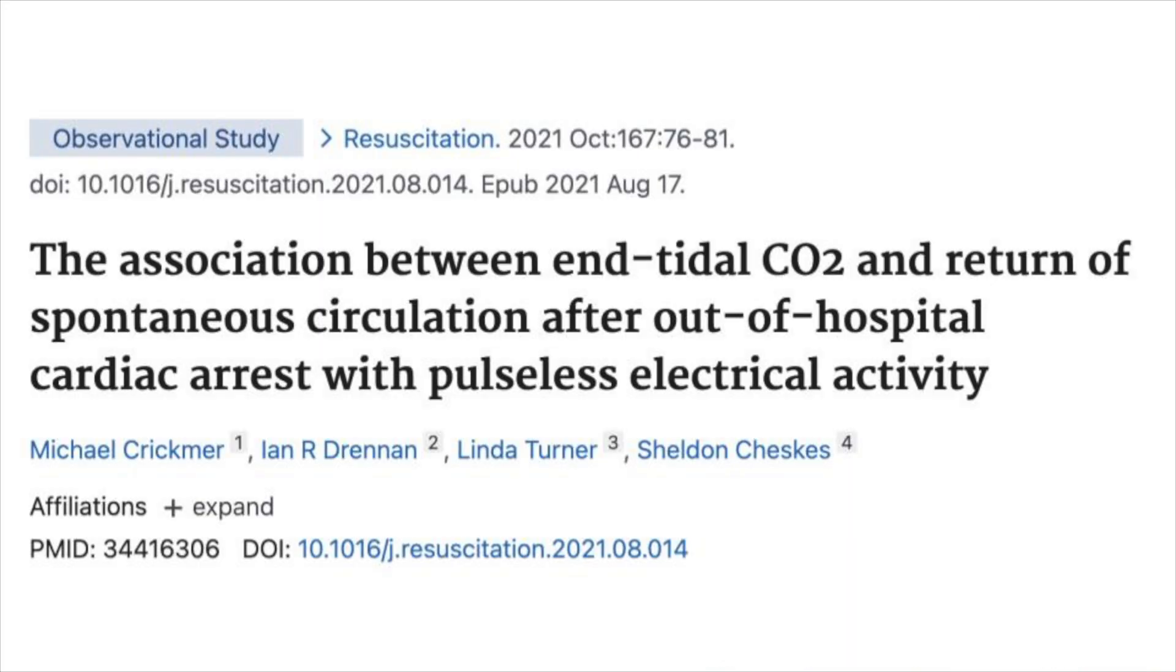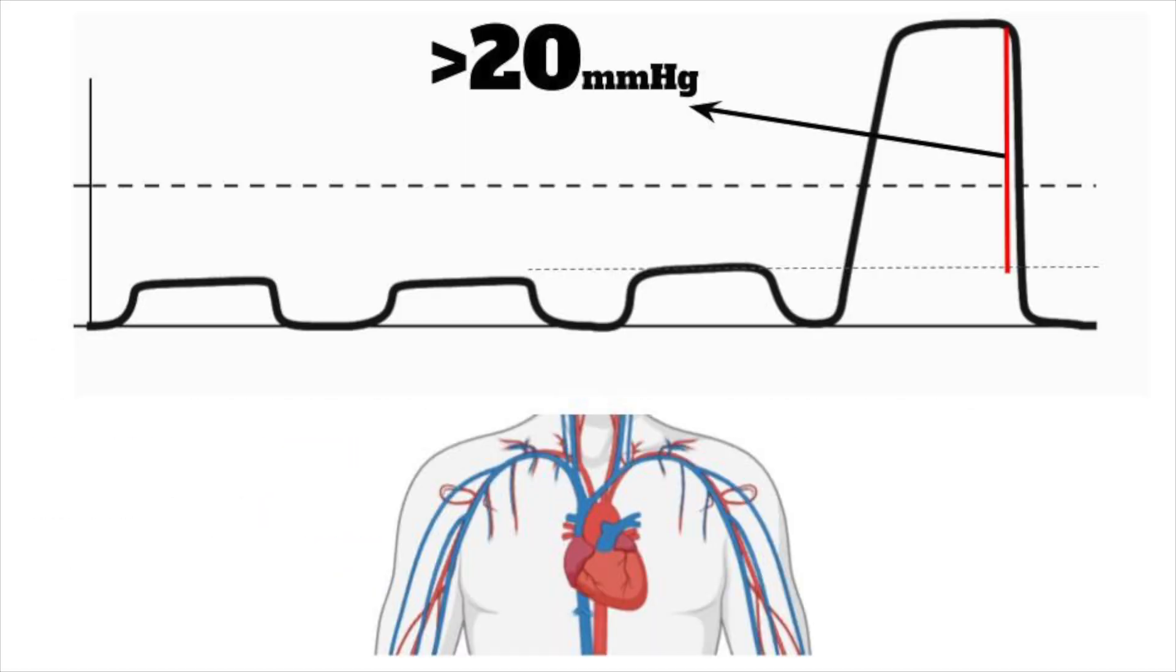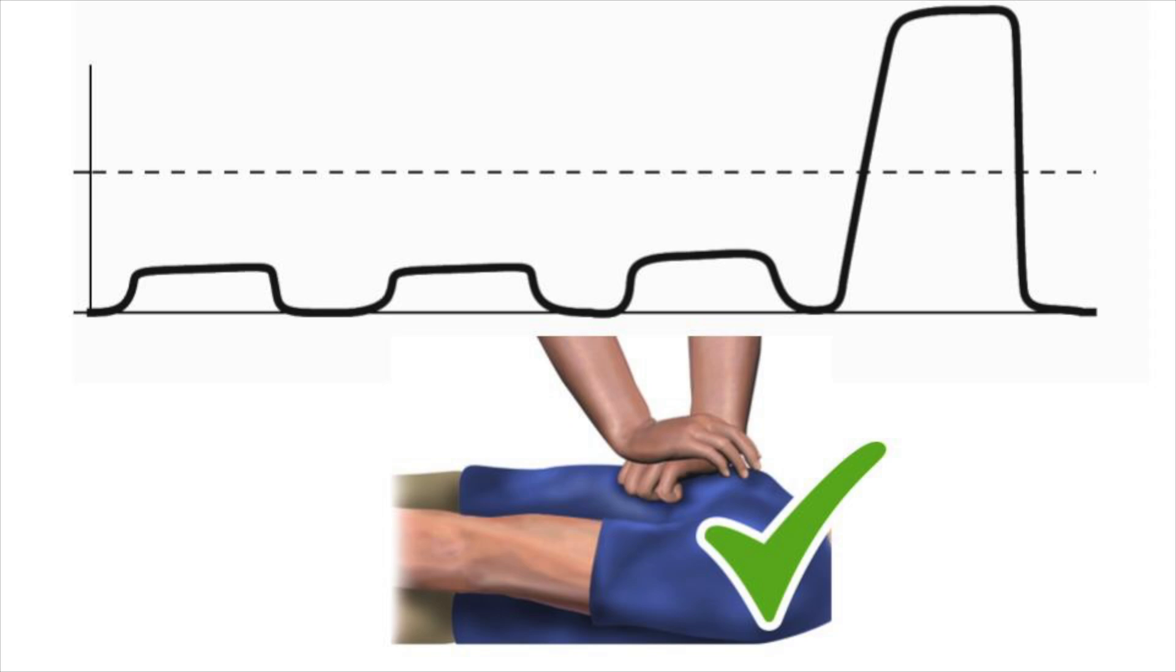An article by Krikmer and colleagues entitled The Association Between End-tidal CO2 and Return of Spontaneous Circulation After Out-of-Hospital Cardiac Arrest with Pulseless Electrical Activity, published in Resuscitation 2021, showed that a rise in end-tidal CO2 by more than 20 millimeters of mercury was highly specific for return of spontaneous circulation in patients with PEA. In addition, the authors conclude that if you see an uptrending end-tidal CO2 during the resuscitation, that should be a marker to continue resuscitation because you're doing a good job. You might actually be closer to getting that patient back unless there's overwhelming clinical evidence to the contrary.